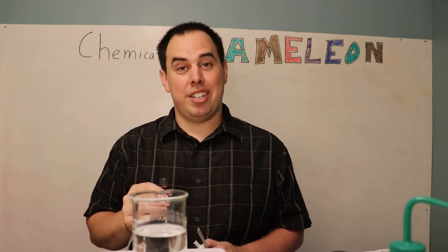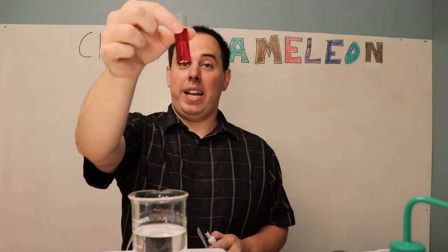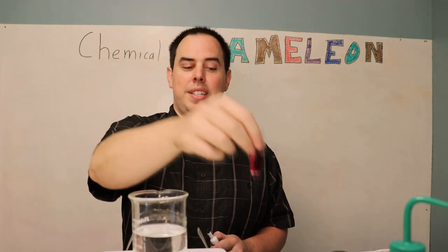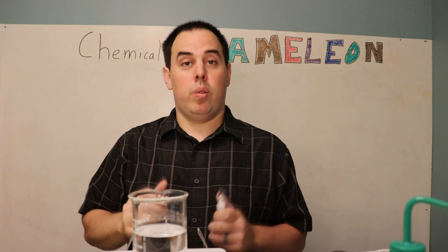I can't think of a better way to showcase oxidation numbers than through the Chemical Chameleon demo. We're going to be using potassium permanganate which is this lovely purple color since it's dissolved in water, and we're going to mix that with a sucrose solution or sugar water.